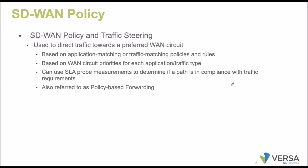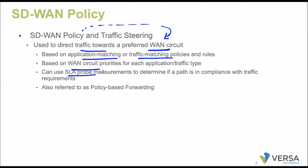SD-WAN policies are used to direct traffic on the preferred WAN circuit - always used to select the WAN circuit. Based upon application matching or traffic matching policies, we select the WAN transport. Instead of relying only on the destination IP address, we get the health of WAN circuits via SLA probing, then select the WAN circuit. This is also a kind of policy-based forwarding since we rely on other parameters to select the WAN transport.